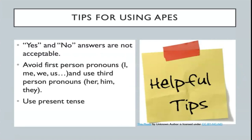Some additional tips for writing a short answer response: never use yes and no as part of your answers — those are never acceptable. If you're going to write a short answer response, you need to answer the question directly. Avoid using first person pronouns — avoid putting yourself in the answer or using personal pronouns like me, we, or us. Use third person pronouns like her, him, or they. And always write in the present tense.